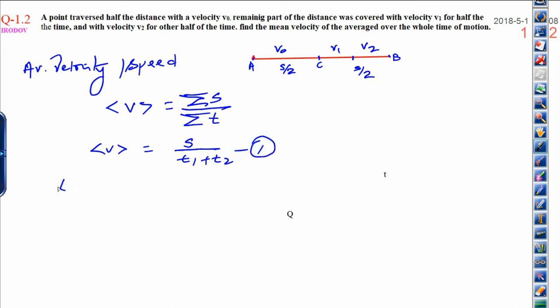Let first we calculate t1. You can calculate it easily. Time is distance upon speed. Distance is s by 2, speed is v0 in first half. Similarly, you can calculate t2.